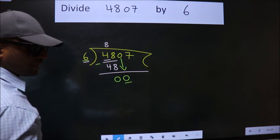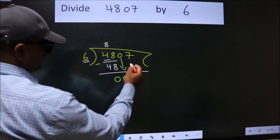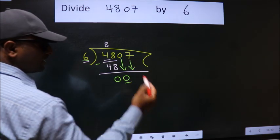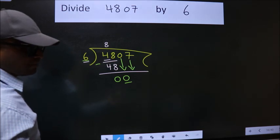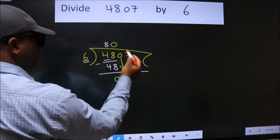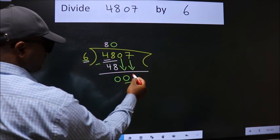0 is smaller than 6, so we should bring down the second number. And the rule to bring down the second number is put 0 here. Then only we can bring down this number.